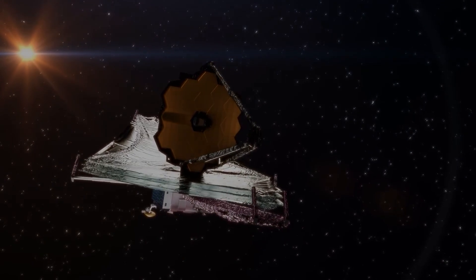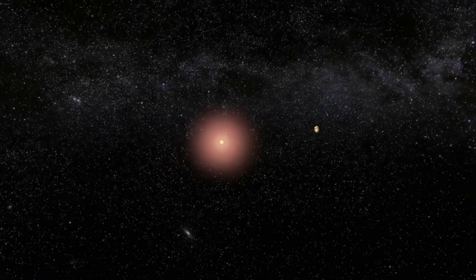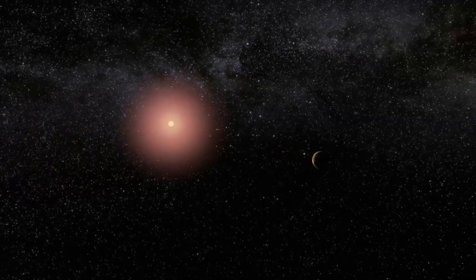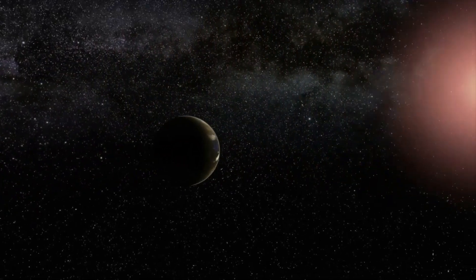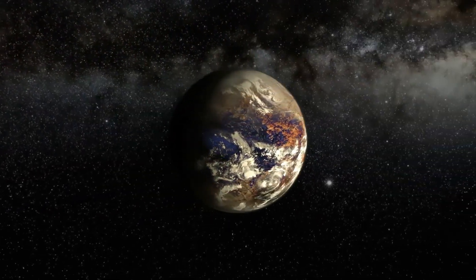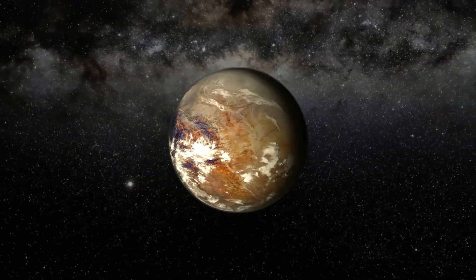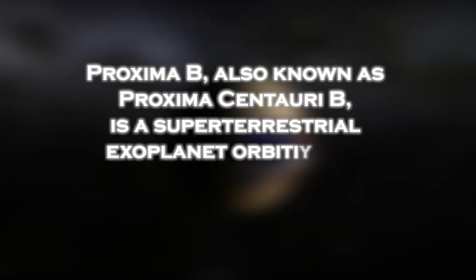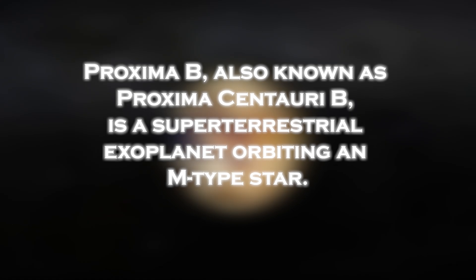It has already begun to shed light on the possibility of life beyond our solar system, as evidenced by the recent discovery of possible lights on a planet light years away. Proxima b, also known as Proxima Centauri b, is a super-terrestrial exoplanet orbiting an M-type star.